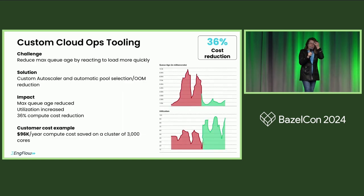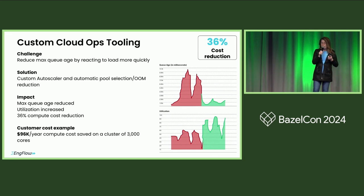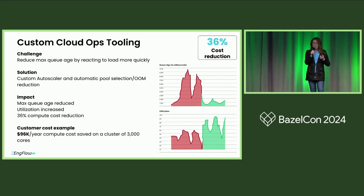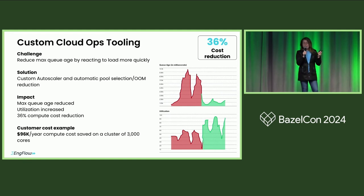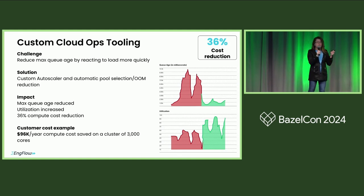And then your leadership comes to you with the question: can you cut your cloud costs in half in four weeks? This is a true story. For that, we developed a system with knobs that you can turn and make appropriate cost and performance adjustments.